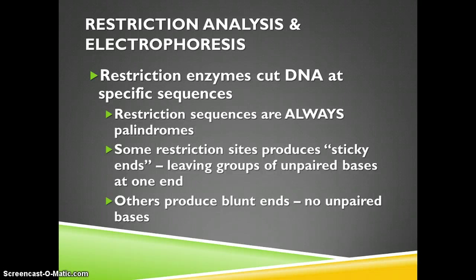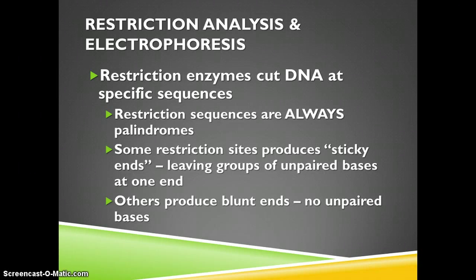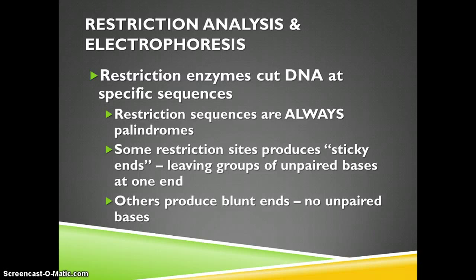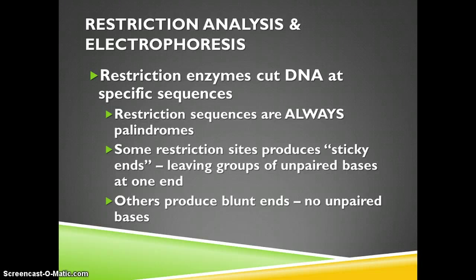Restriction analysis is the process we use to look at the DNA sequence. We use restriction enzymes to cut the DNA at specific sequences. Remember that the restriction sequences are always palindromes — a sequence of DNA that reads the same in both directions. Some restriction sites produce sticky ends, leaving groups of unpaired bases at one end, while others produce blunt ends with no unpaired bases.